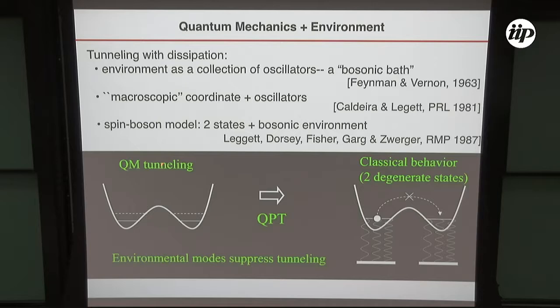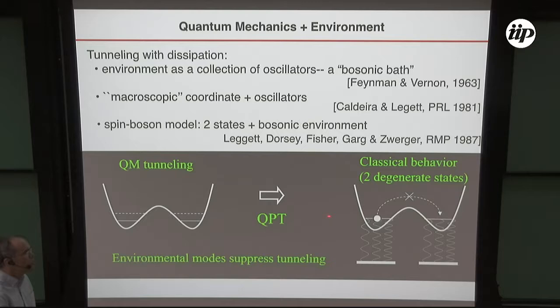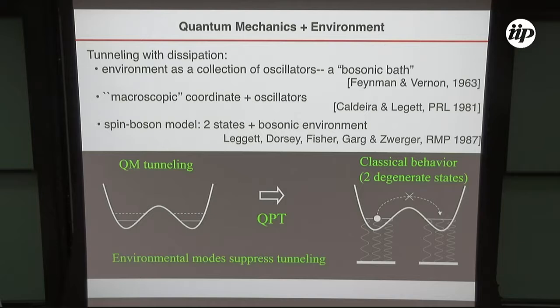Consider a case of quantum tunneling — a two-well system where the particle can be on the left or the right. Because of quantum tunneling, there'll be a splitting into a symmetric and an anti-symmetric state. Suppose the particle is connected to oscillators such that when it's on the left-hand side, the oscillators have to be compressed, and when it's on the right-hand side, they have to be extended. As the particle tunnels back and forth, it's continually compressing and extending these oscillators. If the coupling between the particle and the oscillators gets strong enough, a quantum phase transition happens, largely caused by the fact that the oscillator wave functions become orthogonal to each other. The state now has two degenerate ground states, and the particle is localized in one of the wells.